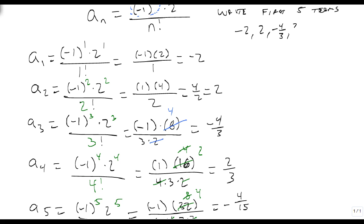So the first 5 terms are -2, 2, -4/3, 2/3, and -4/15. I've found the first 5 terms of a sequence that uses factorials.